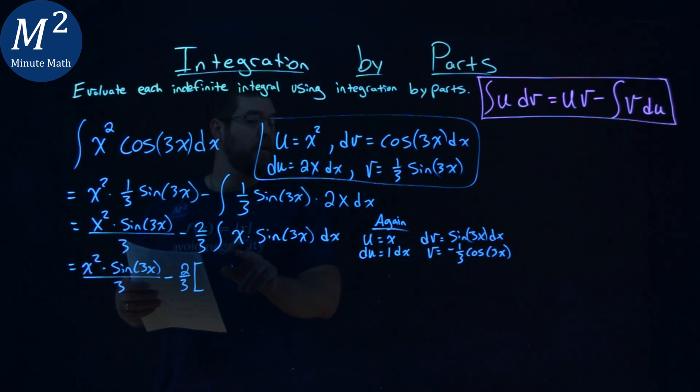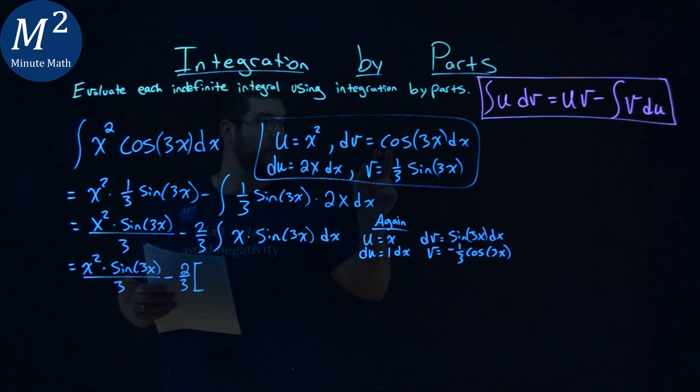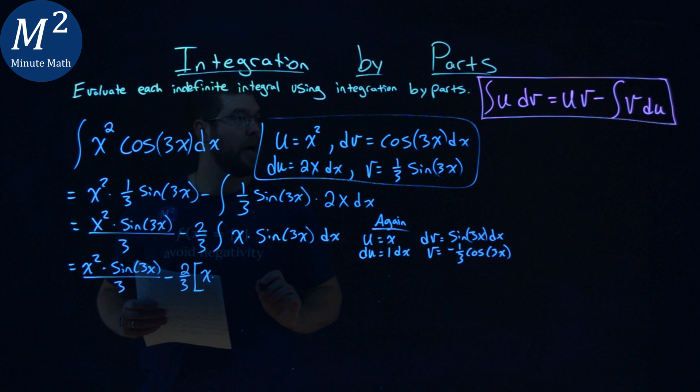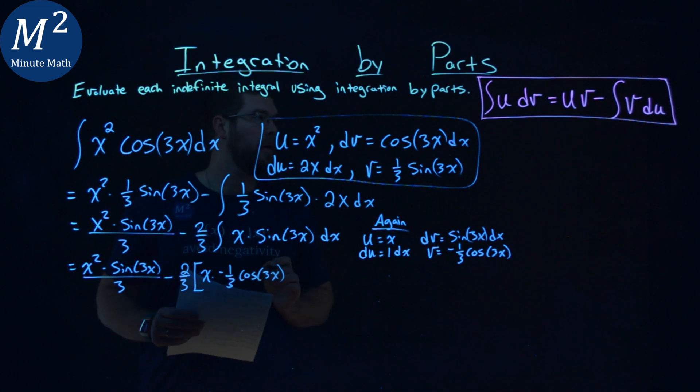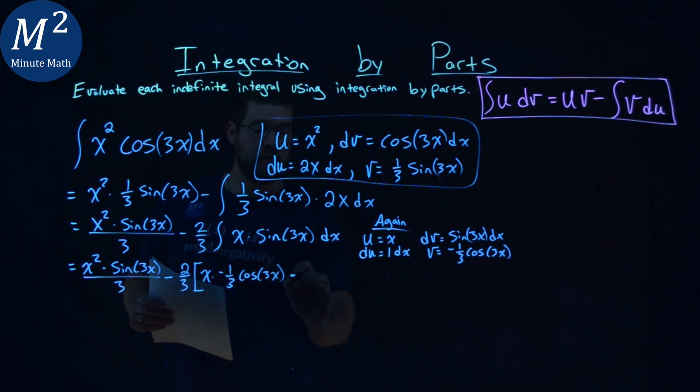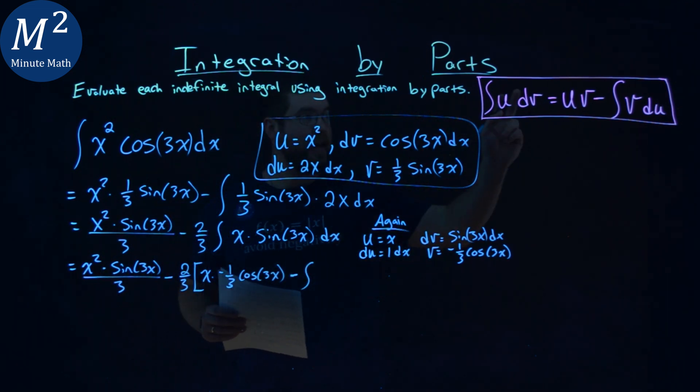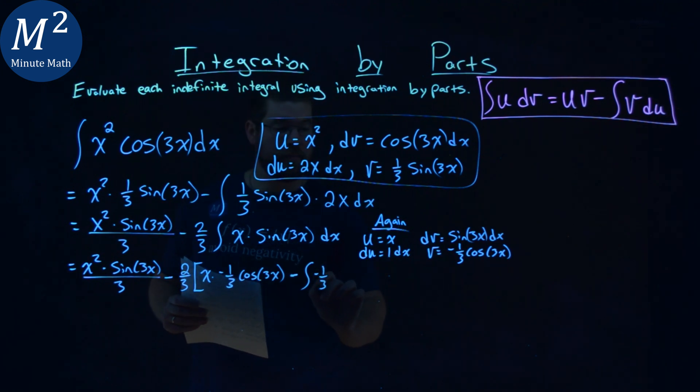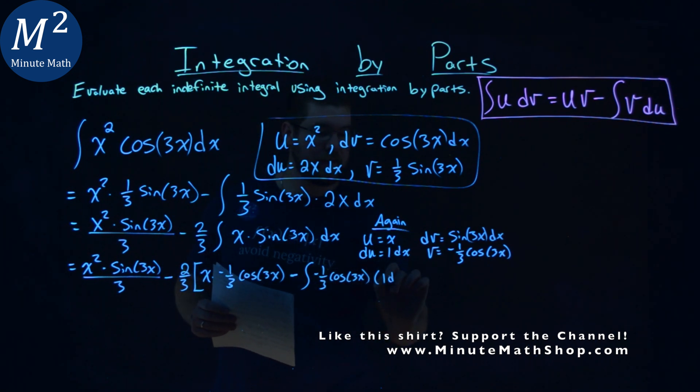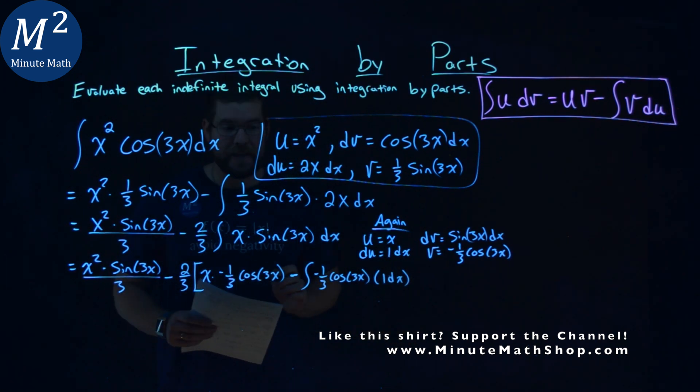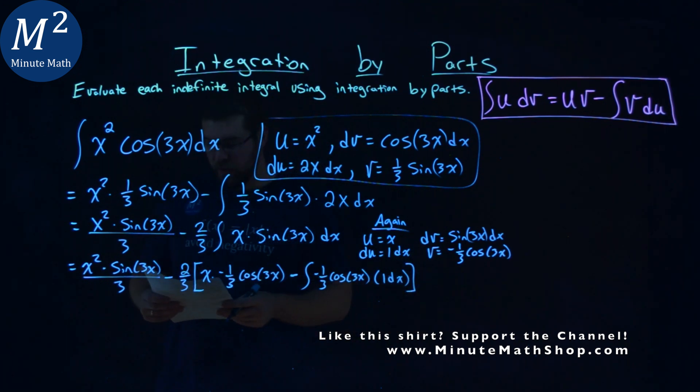The integral of x sine of 3x dx, we're using our formula. Our u value this time is just x. So we have x times our v value, which is negative 1 third cosine of 3x, then we subtract by the integral of our v value, which was negative 1 third cosine of 3x, and our du value here is 1 dx. It's nice and neat now.